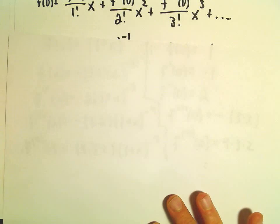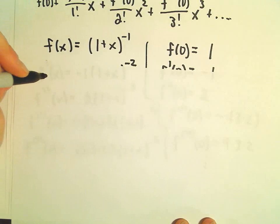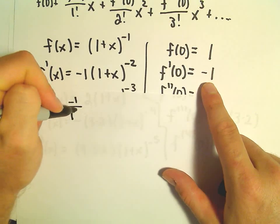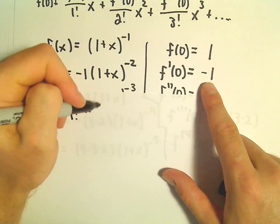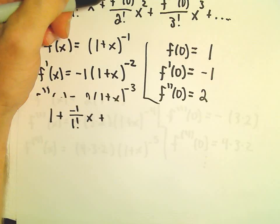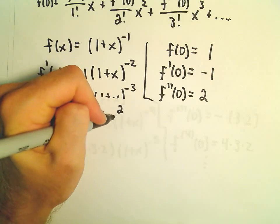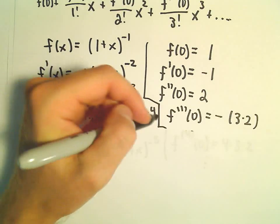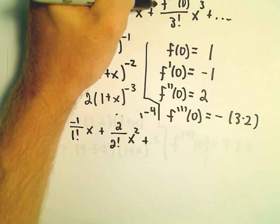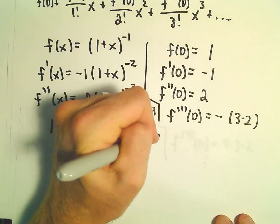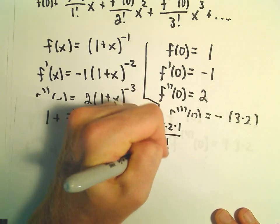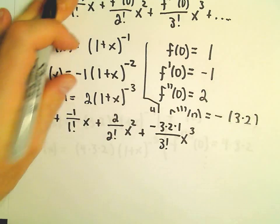So let's see, if we start filling in our formula, it says f(0) would be 1. Then we would have f'(0) which is -1 over 1 factorial times x. Let's see, f''(0), that's going to be 2 over 2 factorial x squared. And then, let's see, we would have plus f'''(0), that's going to be -3 times 2, I'm going to stick the times 1 in there as well, over 3 factorial x cubed.